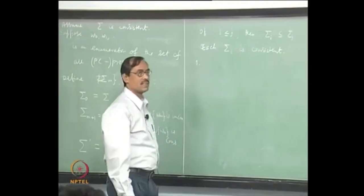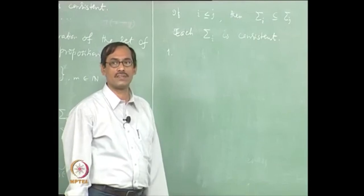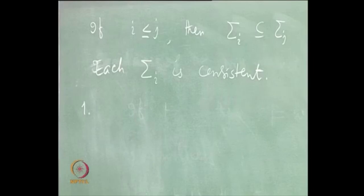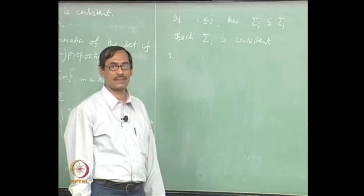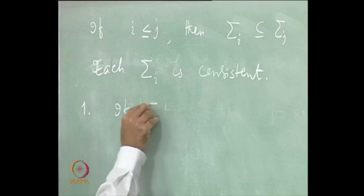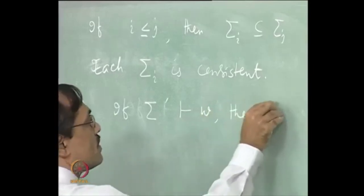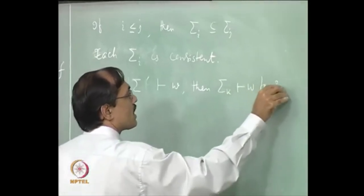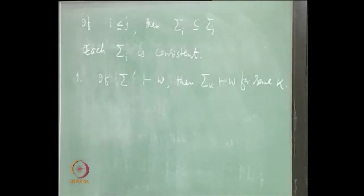We have really extended it too much — it is very large now. It is something like the limit of sigma_n as n goes to infinity. You do not have the limit concept here, so you write it as a union. That is the idea. Now we will find out some nice properties of this sigma prime.